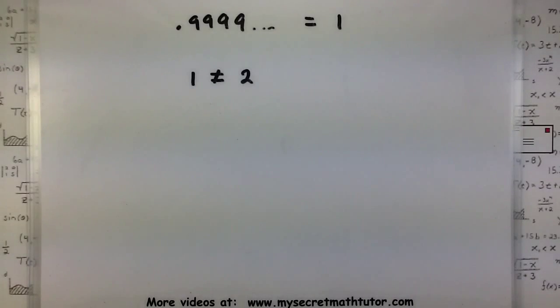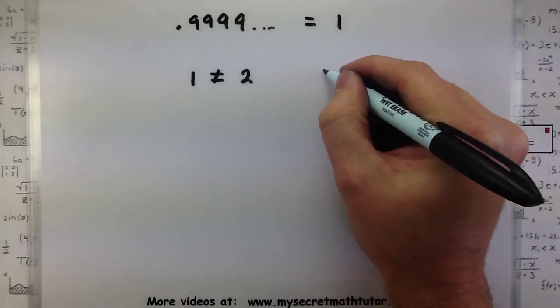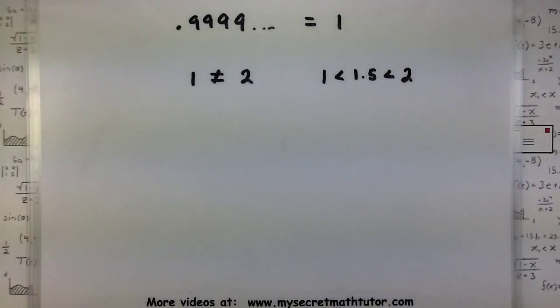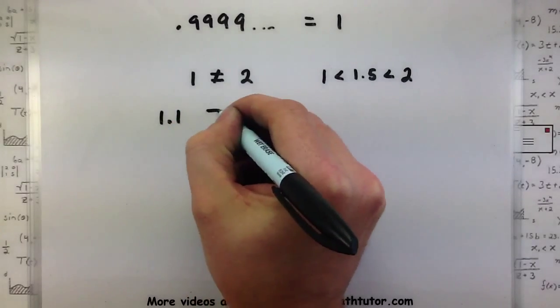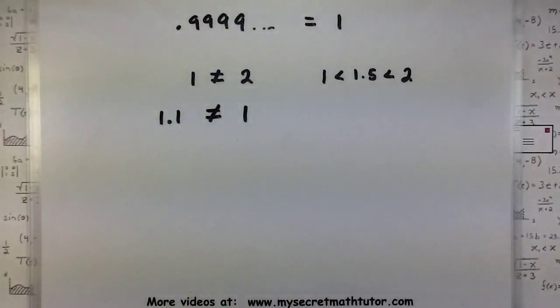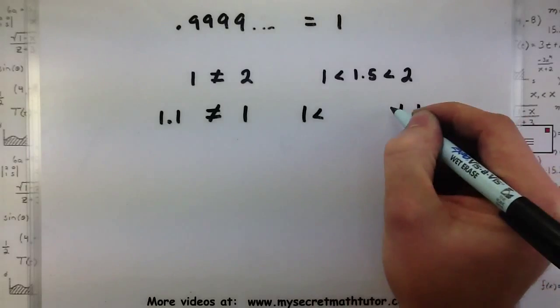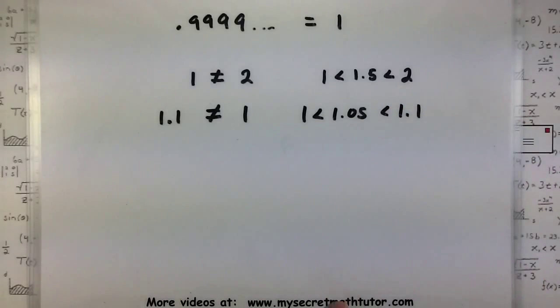And one way that I can test that two things are not equal is I can actually find another number in between them. In this example, I know the two are not equal because I can fit in another number, say 1.5, right in between the two. Now I can keep using this argument even for numbers that are really, really close. For example, I know that 1.1 is not equal to 1. And why is that? Because I can fit another number right in between the two, maybe like 1.05, halfway between the two, so the two can't be the same.